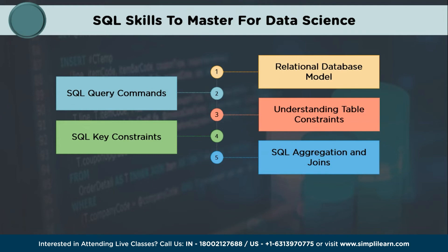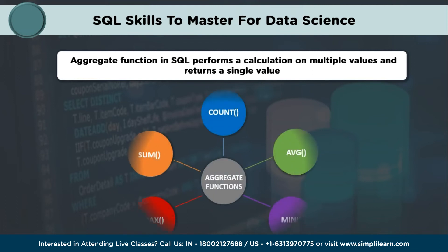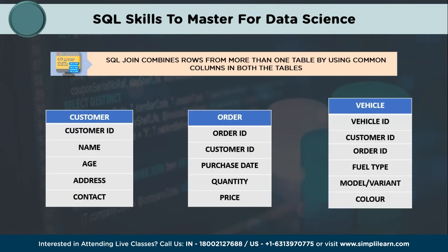Moving ahead, having a good knowledge of SQL aggregation and join operations. As a data scientist, you have to learn about table relationships and how to use joins to combine data from multiple tables. Aggregate functions in SQL perform calculations on multiple values and return a single value. You have to explore various aggregate functions like sum, count, average, max, and minimum, and understand how to group data using a group by clause and apply aggregate functions to calculate summary statistics on grouped data. Also, you have to have a good knowledge of join functions to combine data from multiple tables. Understand different types of joins such as inner join, left join, right join, and full join.